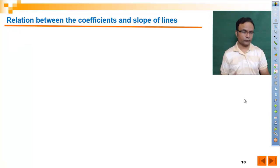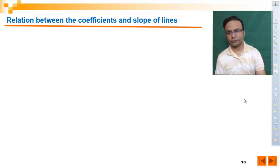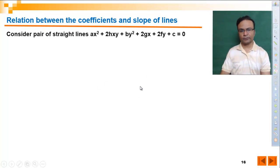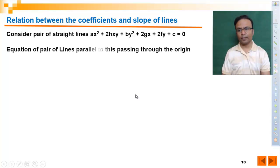Let's see one most important relation, that is the relation between the coefficients and slope of lines. For that, consider a pair of straight lines in general equation form. The equation of a pair of lines parallel to this passing through the origin.